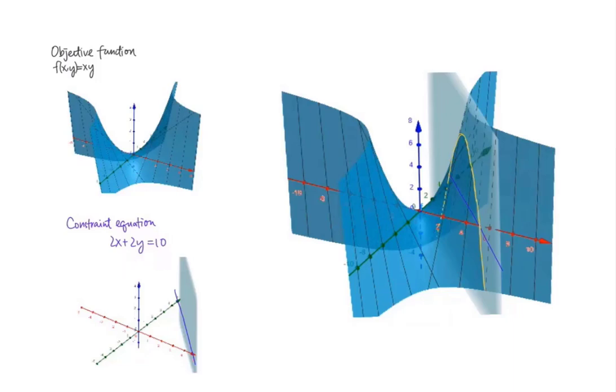That means we only inspect points on this purple line to see which point (x,y) gives the highest or lowest output for the function f(x,y). The corresponding outputs are only those in this yellow line.